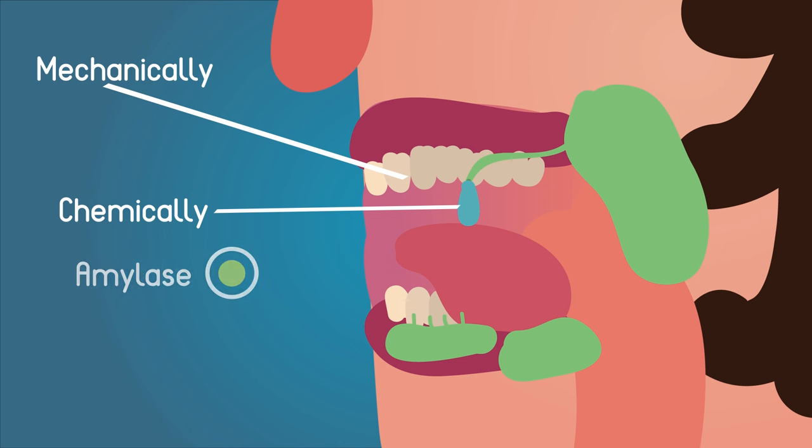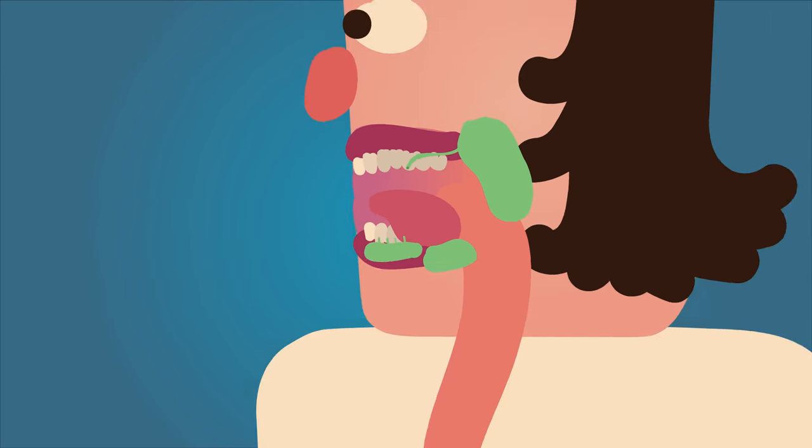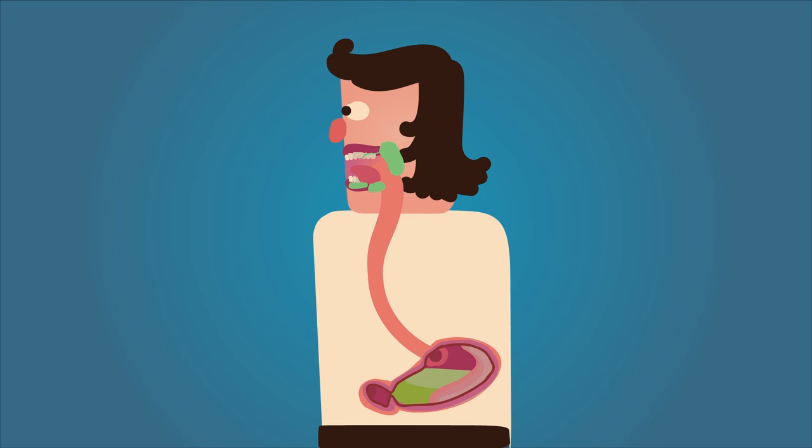Saliva contains an enzyme called amylase that takes the big starch molecules you find in the bun and breaks them into smaller pieces called maltose. However, this is just the beginning of the digestive journey, and a lot more needs to happen.